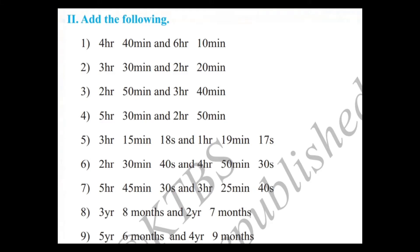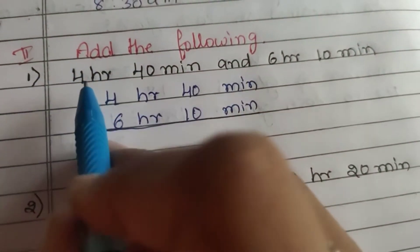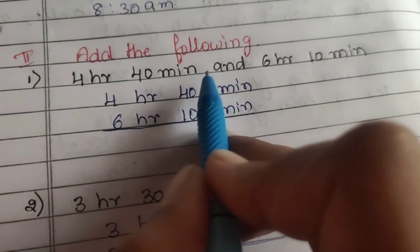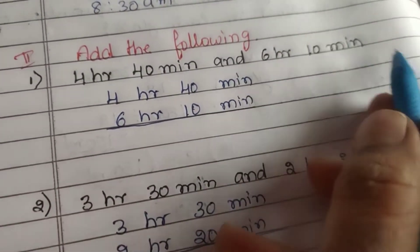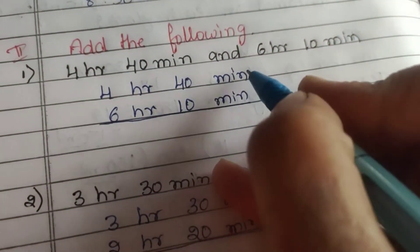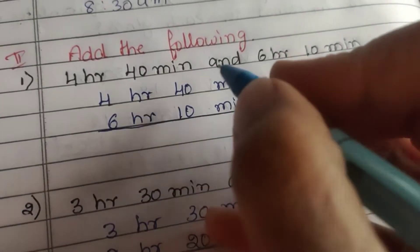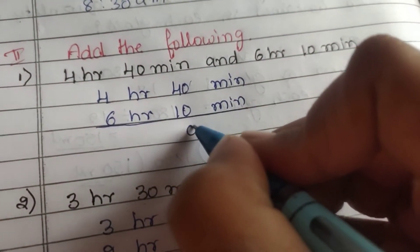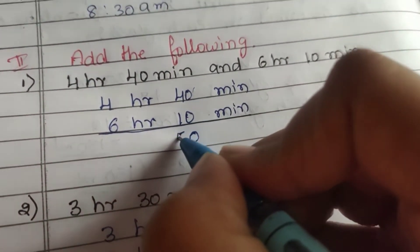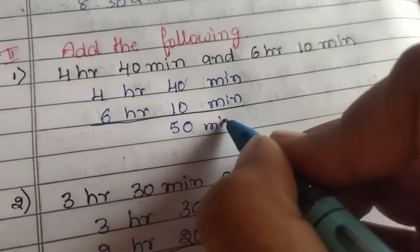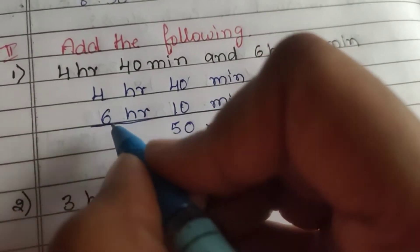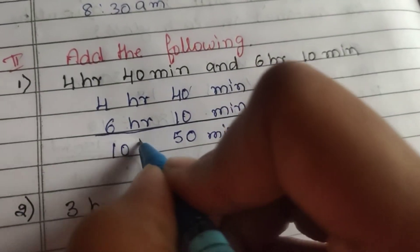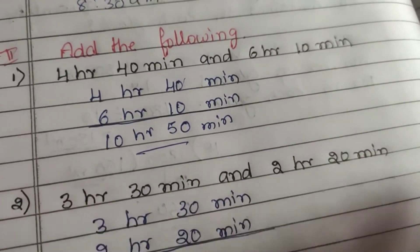Now the written section — add the following. First question: 0 plus 0 is 0, 4 plus 1 is 5 — 50 minutes. 4 plus 6 is 10, so the answer is 10 hours 50 minutes.